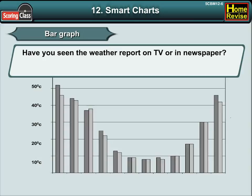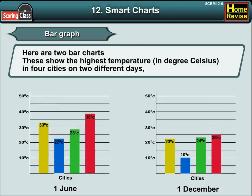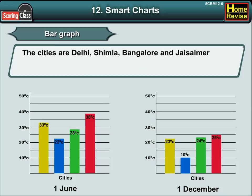Kids, have you seen the weather report on TV or in a newspaper? Here are two bar charts. These show the highest temperature in degrees Celsius in four cities on two different days. The cities are Delhi, Simla, Bangalore, and Chaisalmer.